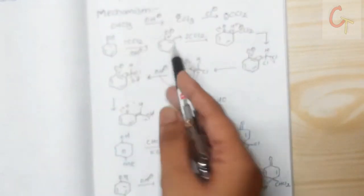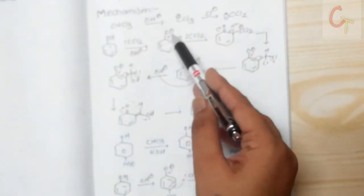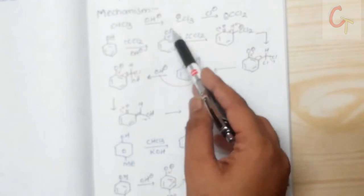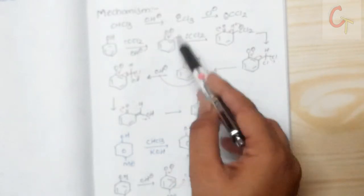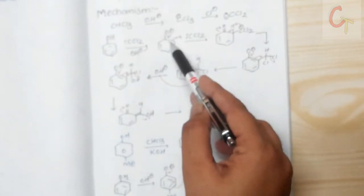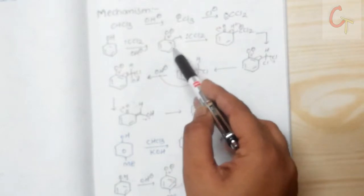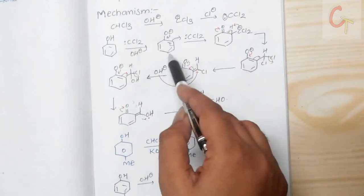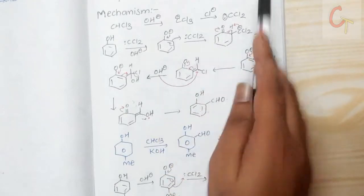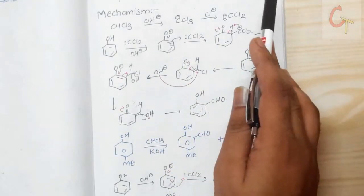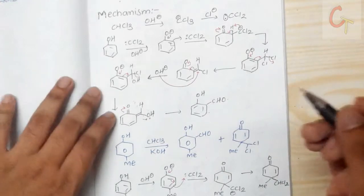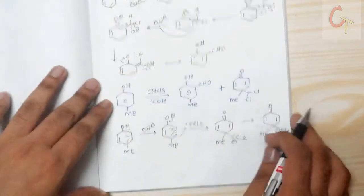For the para product, the migration takes one more bond step: oxygen migrates and the carbon bond migrates so that instead of the ortho carbon, the para carbon attacks the carbene. We thus get the para-substituted aldehyde, that is, para-hydroxybenzaldehyde (salicylaldehyde).